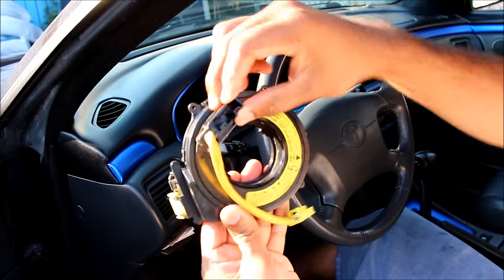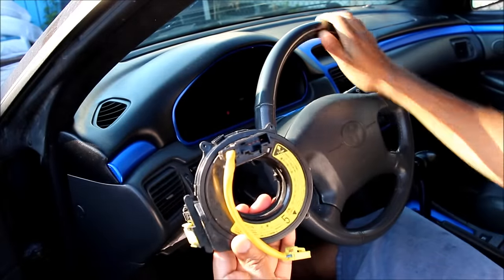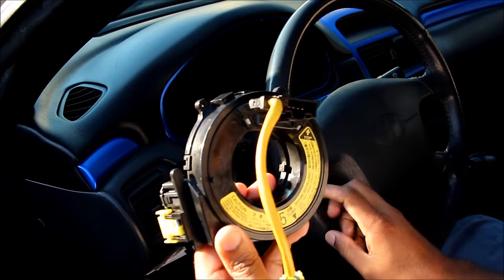This here is called the clock spring. It's responsible for taking the electronic signals and the rotating steering wheel into the car. Sometimes these clock springs fail causing your horn to stop working or an airbag light to light up on the dash.